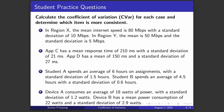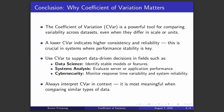Now here are four examples for your personal or group practice. Calculate the coefficient of variation for each case and determine which item is more consistent. Make time to practice these to ground your understanding of the concept of coefficient of variation. In conclusion: the coefficient of variation is a powerful tool for comparing variability across data sets even when they differ in scale or units. A lower CV indicates higher consistency and reliability, which is crucial in systems where performance stability is important.